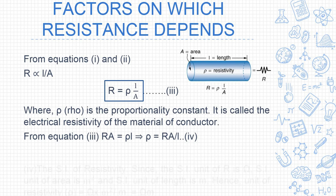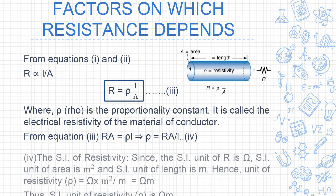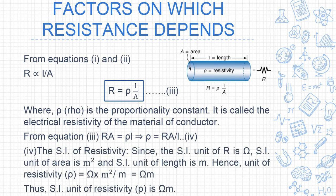From the equation R = ρL/A, we can find rho: ρ = RA/L. The SI unit of resistivity is ohm meter squared upon meter, which simplifies to ohm meter. The SI unit of R is ohm, area is meter squared, and length is meter.